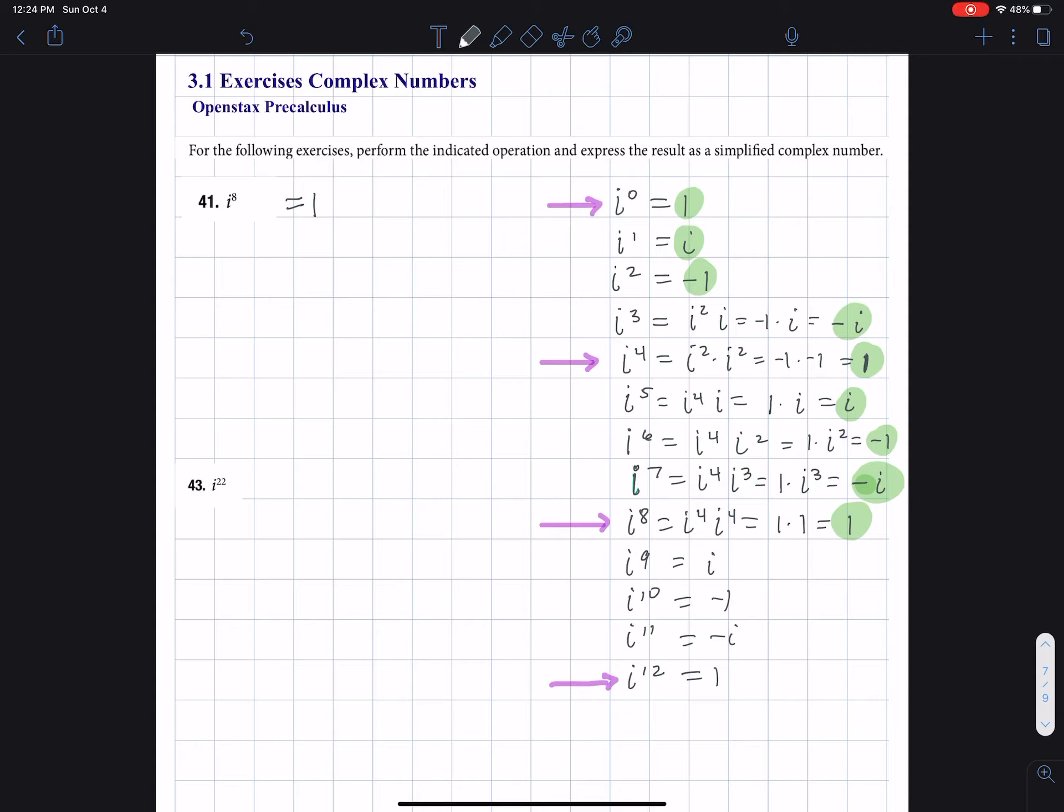Well, what I can do is take 22 and divide by four. Four goes in five times. But what I'm interested in is not really how many times four goes in, I'm interested in the remainder. The remainder is two.